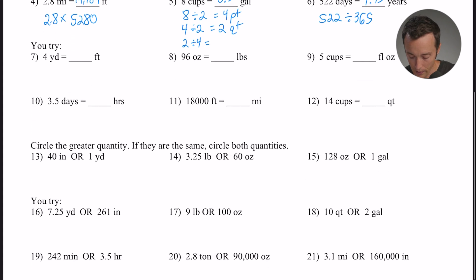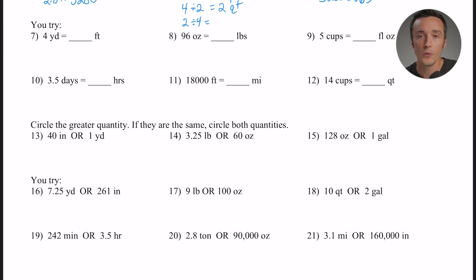Assuming you've had a chance to do that, another common question here is going to be to compare two values or two numbers that are in different measurements, and they want you to pick the one that's either bigger or smaller. In this case it says circle the greater quantity, and if they are the same, circle both quantities. Okay, so which one is bigger, 40 inches or one yard? Well, pick one of them and convert it to the other one. So for example, in this first one I'm going to take the one yard and I'm going to convert it to inches, since that 40 inches is in inches. One yard would be 36 inches. So it's always good to convert it first, and then it's kind of obvious just which one is bigger. 40 inches or 36 inches? Of course 40 inches is bigger.